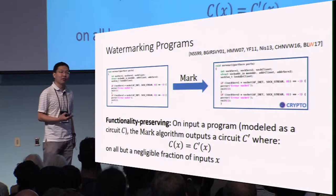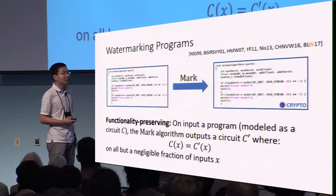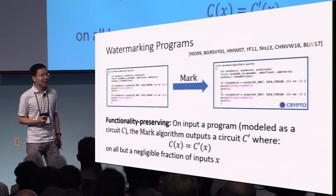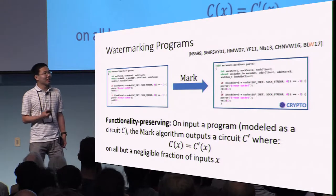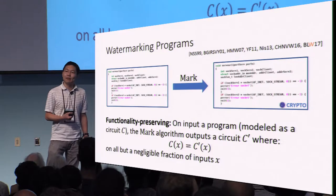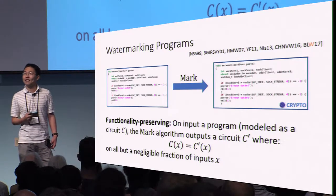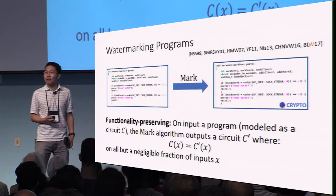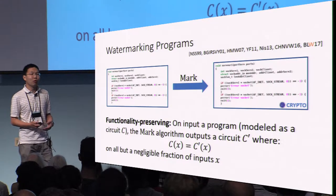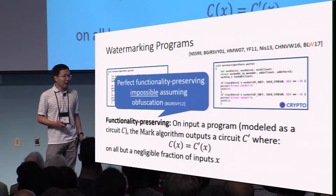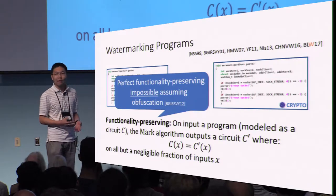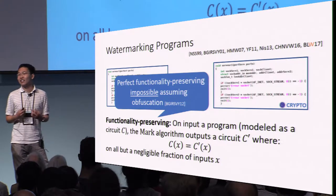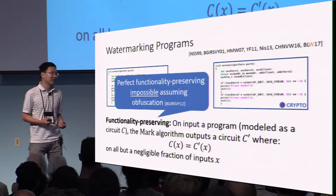Now let me define more concretely what properties we desire. The first property is that the watermarked program should preserve the functionality of the original program. Basically, when we watermark a circuit C, it should produce a new circuit C prime such that on almost all inputs C prime and C agree. One might ask why we don't require perfect functionality preservation. Unfortunately, if we require strong security properties, perfect functionality-preserving watermarking is actually not possible assuming the existence of indistinguishability obfuscation.